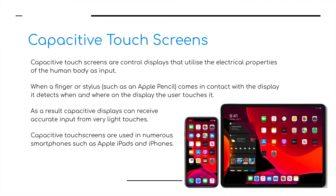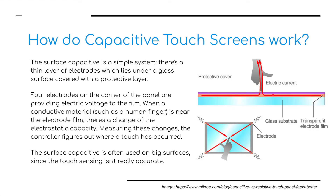Capacitive touch screens are found on most smartphones and tablets. They are control displays that utilize the electrical properties of the human body as input. When a finger or stylus such as an Apple Pencil comes into contact with the display, it detects when and where the display was touched. As a result, capacitive displays can receive accurate input from very light touches and are used in numerous smartphones such as the iPad and iPhone.